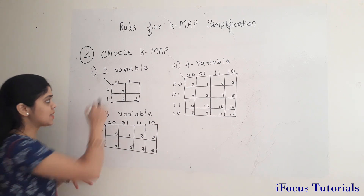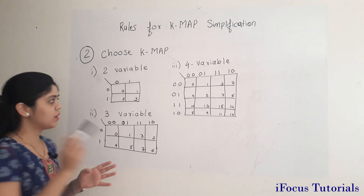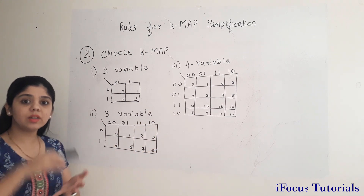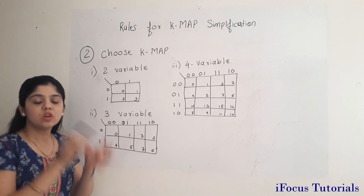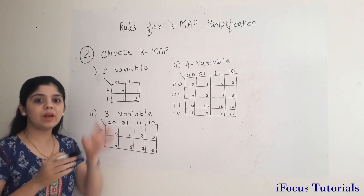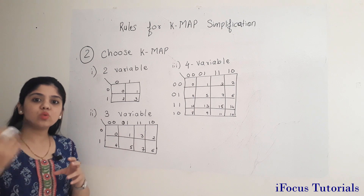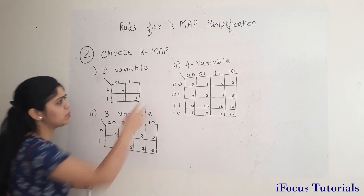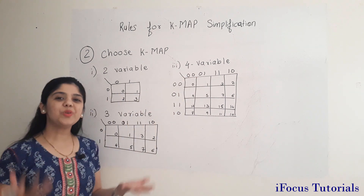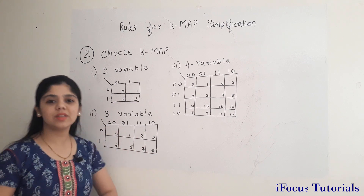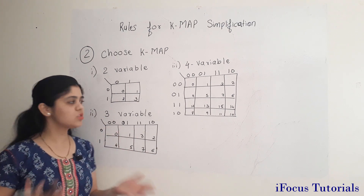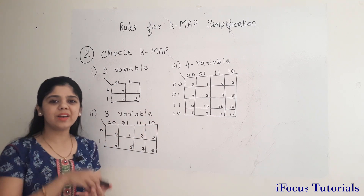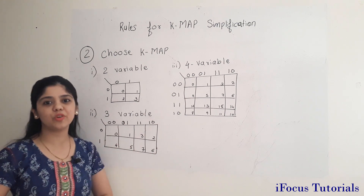Inside each cell or box of the KMAP, there are certain numbers written. These numbers are the same cell numbers referenced in rule number 1, where a symbol is given with certain numbers in brackets. That number corresponds to the cell number in the respective 2, 3, or 4 variable KMAP. It is not necessary to memorize all these numbers — once you start solving KMAPs, you will develop a habit.